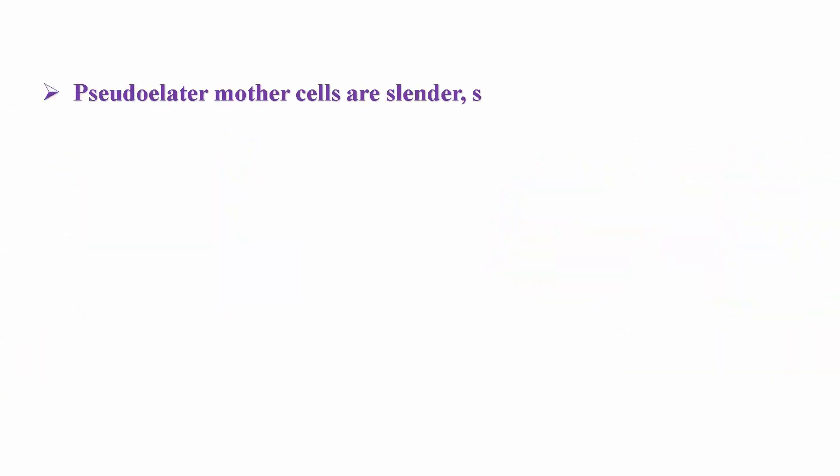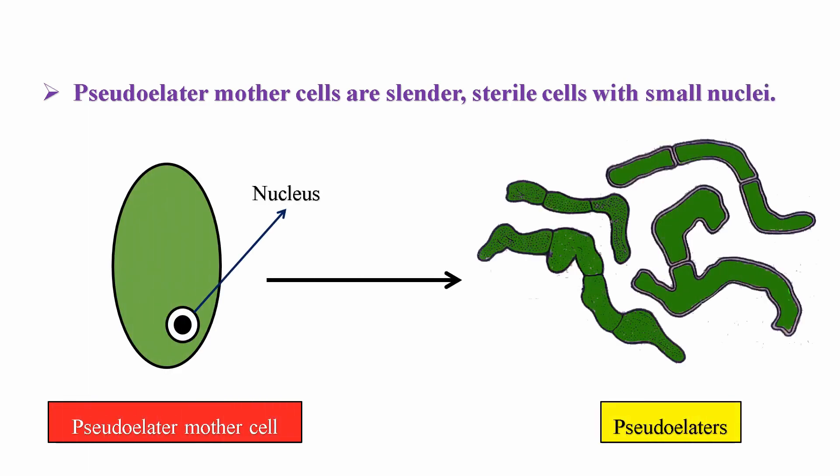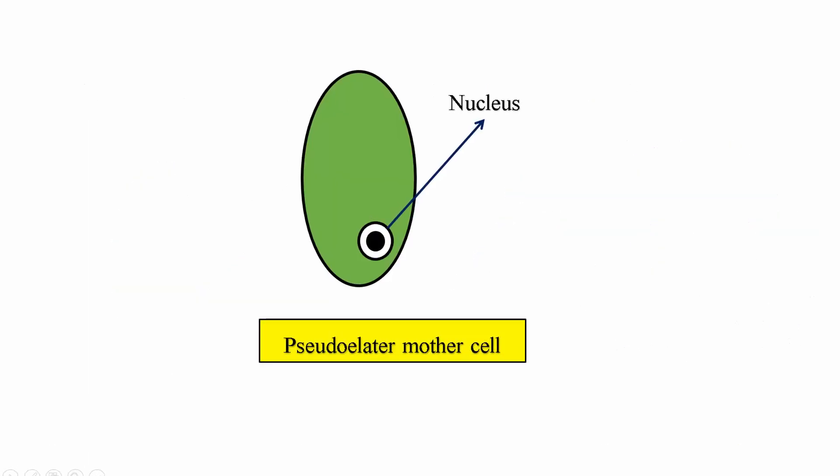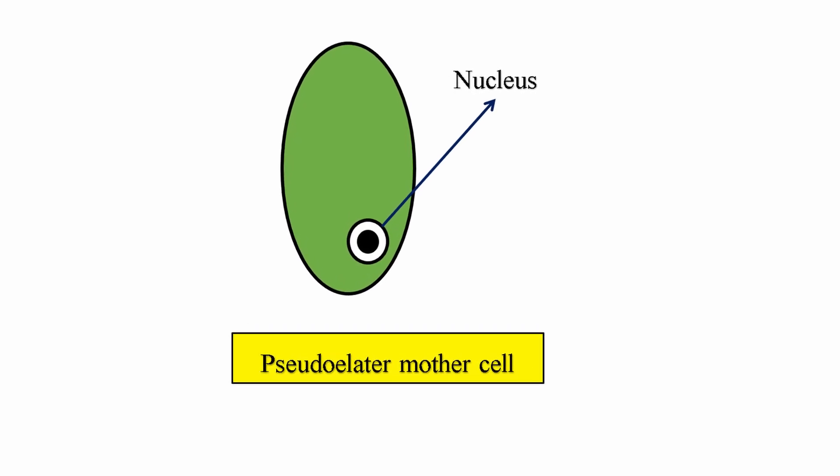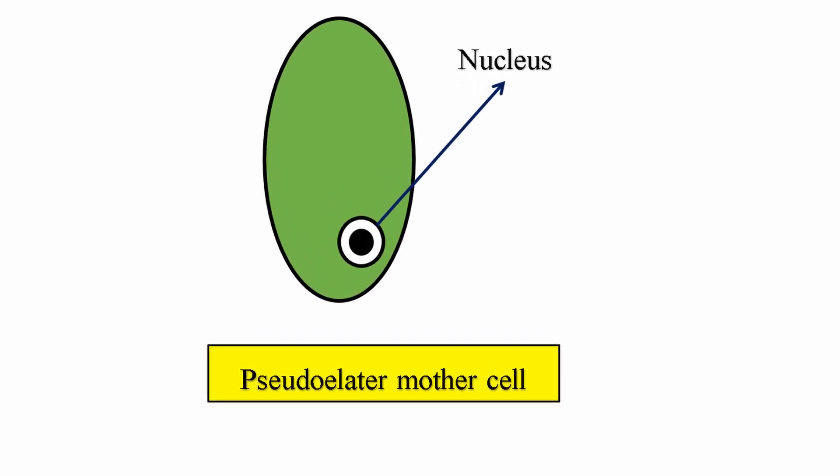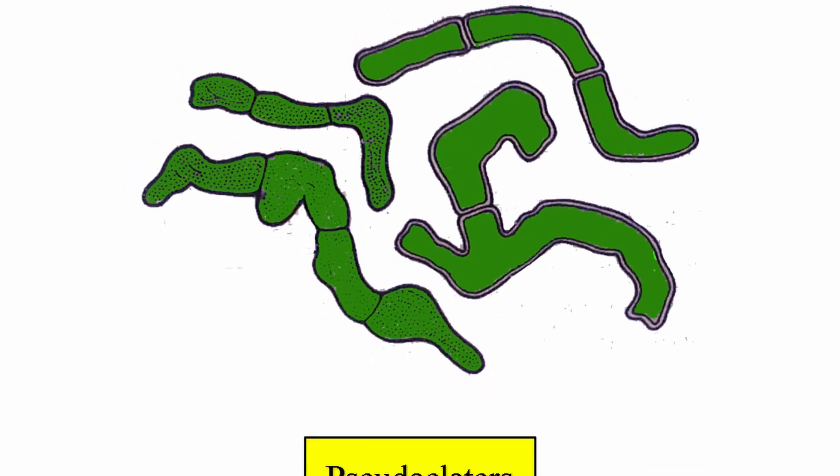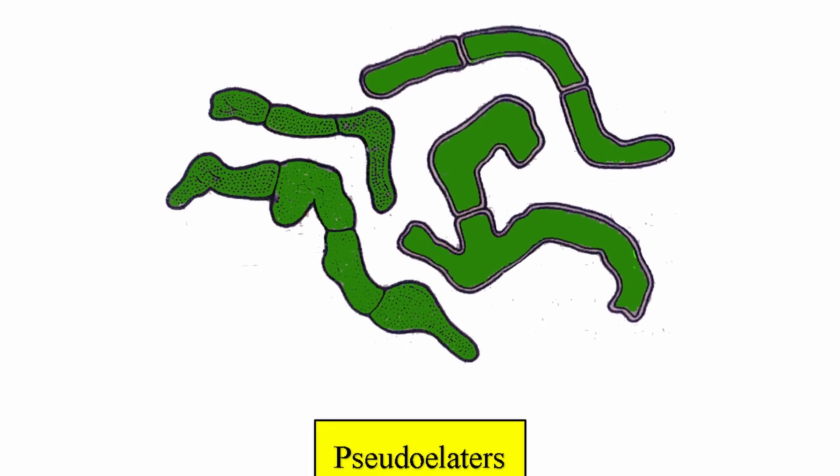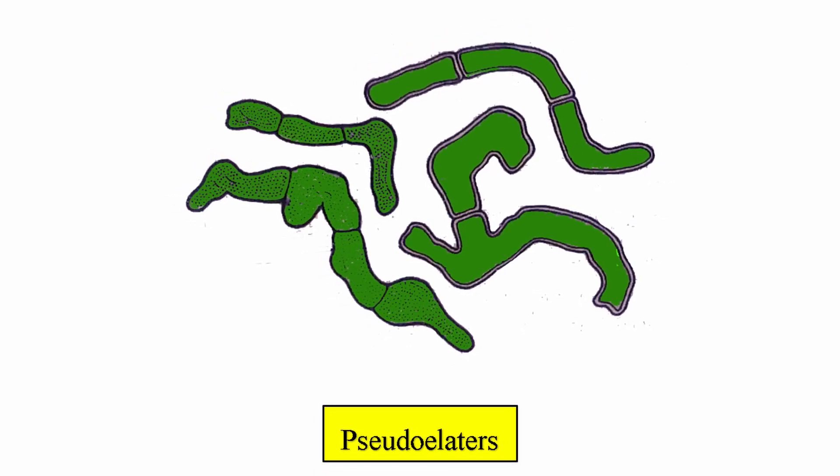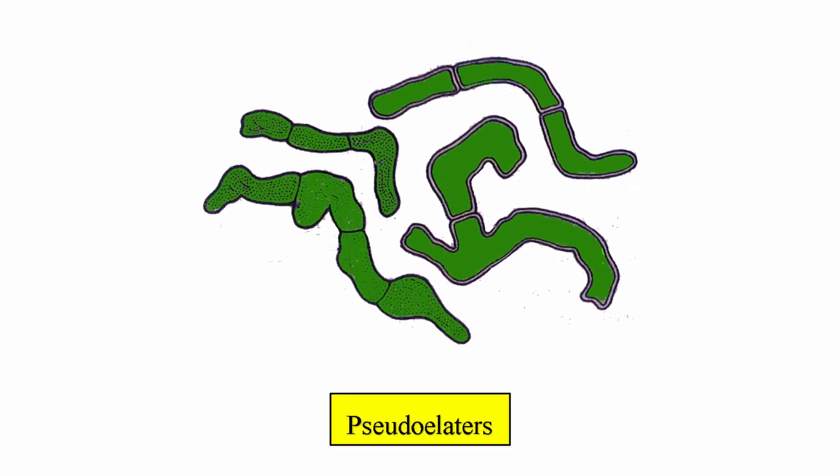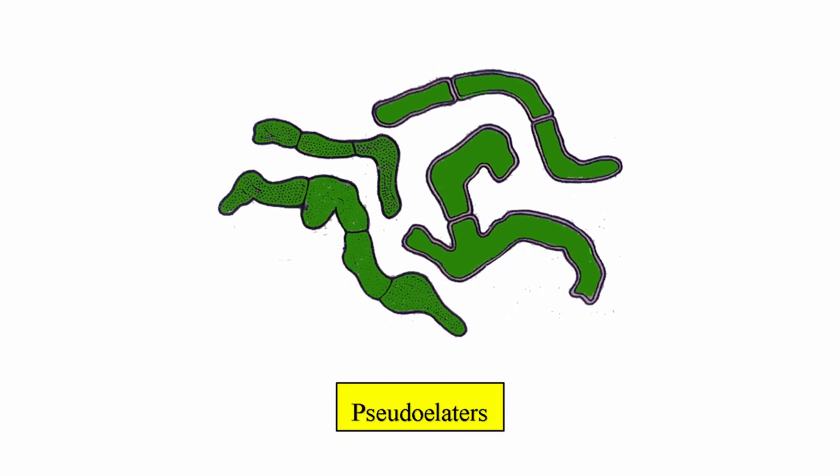Pseudo-elater mother cells are cylindrical sterile cells with small nuclei. According to Vardavats, these pseudo-elater mother cells divide by transverse or oblique walls to form a network of sterile cells and at the time of dehiscence, the network breaks up into one to three celled pseudo-elaters.